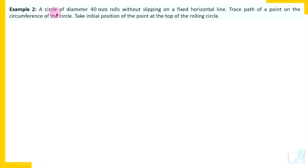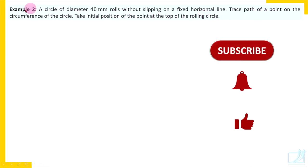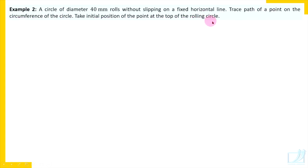Be ready with your sketchbook and drawing instruments and just follow the construction I am explaining. A circle of diameter 40 mm rolls without slipping on a fixed horizontal line. Trace path of a point on the circumference of the circle. Take initial position of the point at the top of the rolling circle. First draw horizontal vertical center lines and locate the center. Radius of the circle is 20 mm. Use that radius and draw a circle.